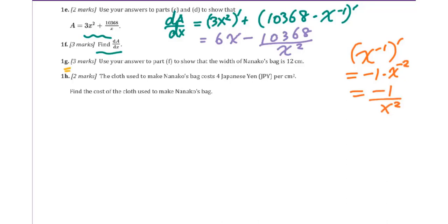For 1g, use your answer to part f to show that the width of the bag is 12 cm. We want to get the minimum of the area. Therefore, you will set up dA by dx equal to 0. So we have 6x minus 10368 over x squared equal to 0. We know that x cannot be 0. Therefore, for every term we multiply by x squared, we want to get rid of this denominator first.